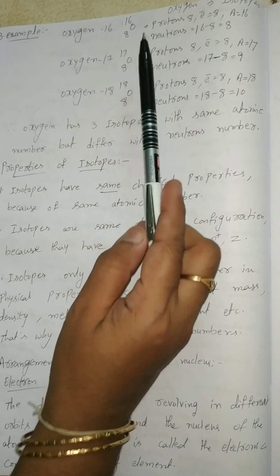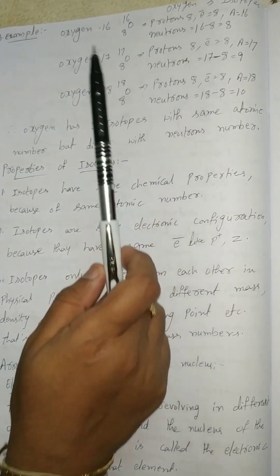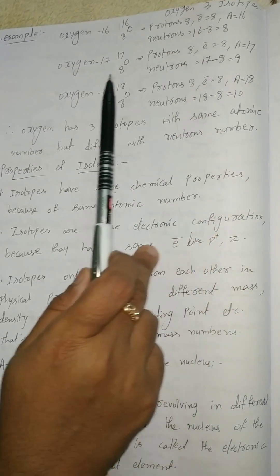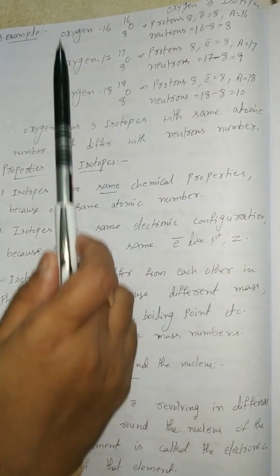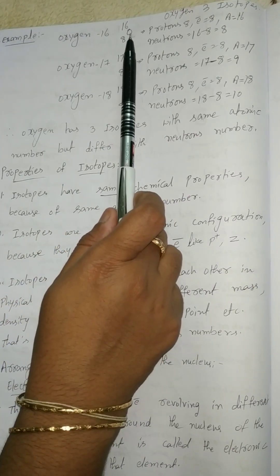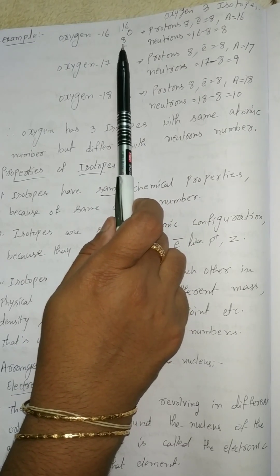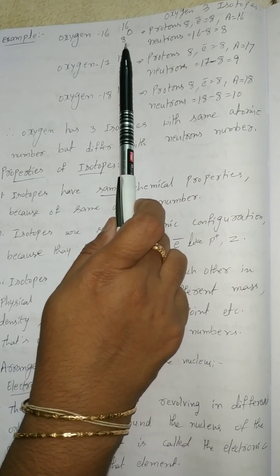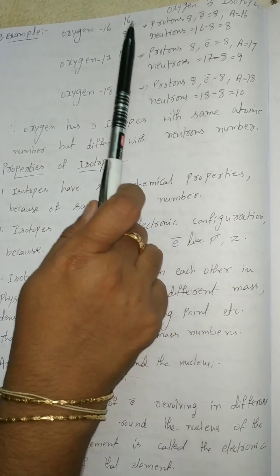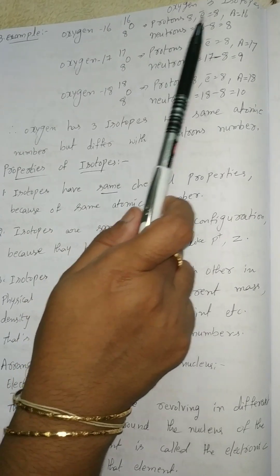Another example is oxygen. Oxygen has 3 isotopes with mass numbers 16, 17, and 18. First one, oxygen-16: 8O16. Atomic number Z equals 8, protons 8, electrons 8, and mass number A equals 16. Neutrons equal to A minus Z: 16 minus 8 equals 8. So neutrons are 8.